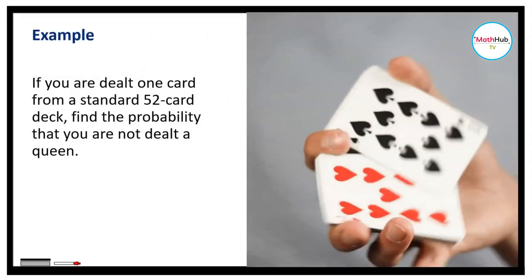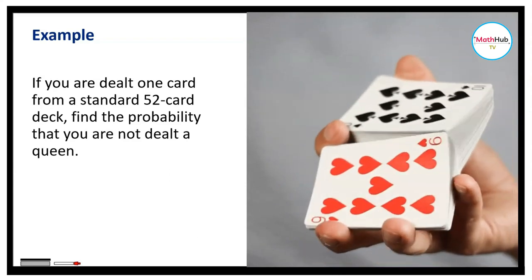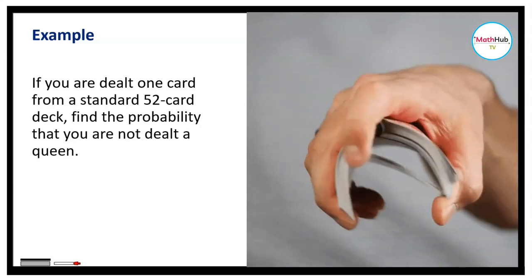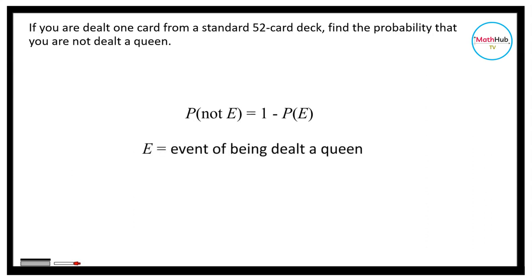To illustrate this concept, let's look at the following example. If you are dealt one card from a standard 52-card deck, find the probability that you are not dealt a queen. To solve this, we will use the formula that the probability of not E is equal to 1 minus the probability of E, where E is the event. In this case, the event is being dealt a queen. So we are looking for the probability of not being dealt a queen, computed by subtracting the probability of being dealt a queen from 1.